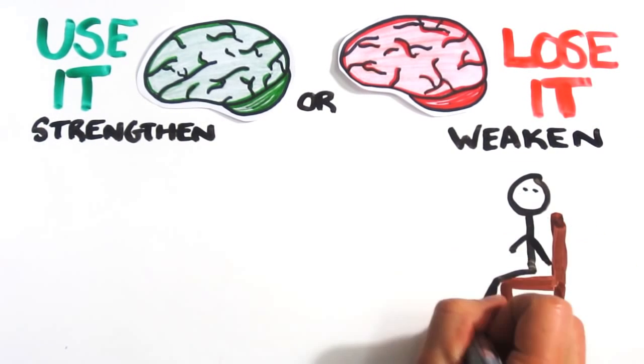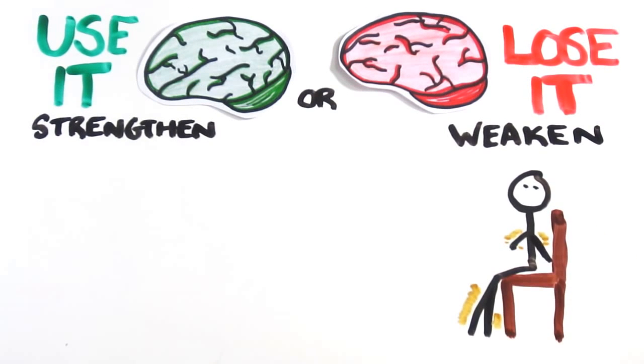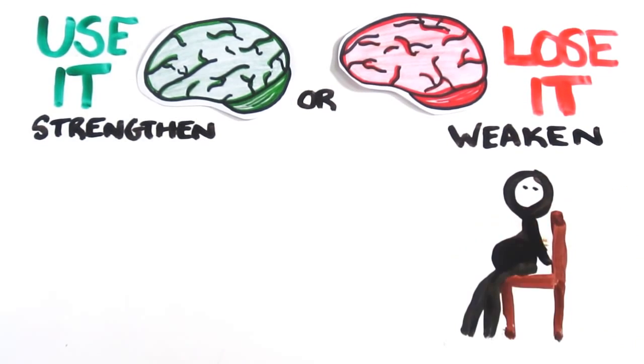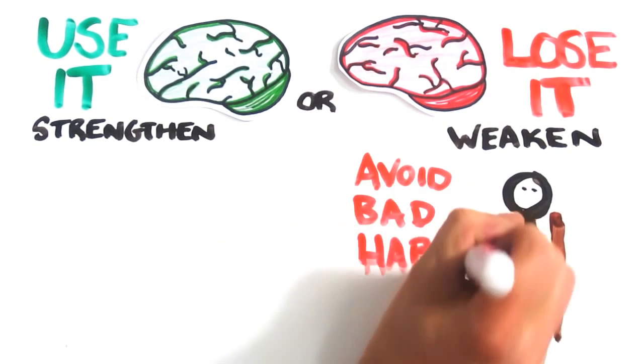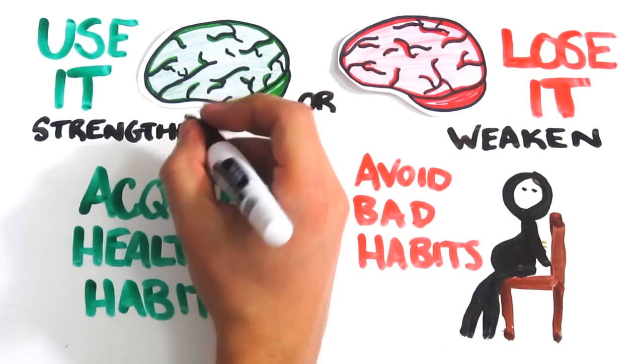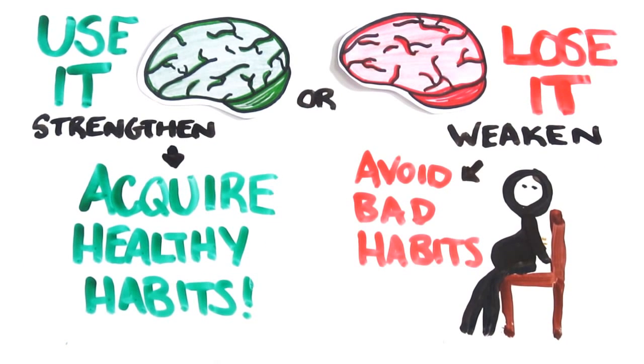Much like your muscles, which, if sitting still all day, itch for activity, but after prolonged non-use, they become complacent. Luckily, because of this use-it-or-lose-it brain, the same neuroplastic system that proliferates these habits can also be used to acquire healthier ones.